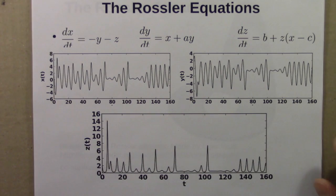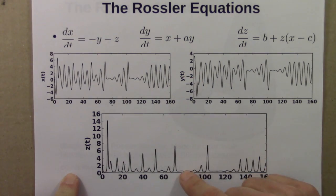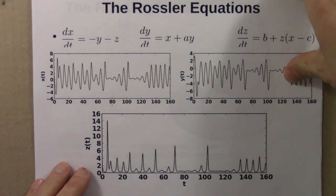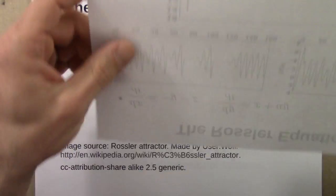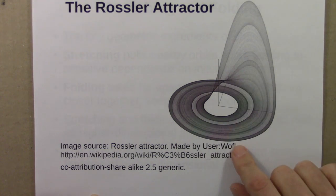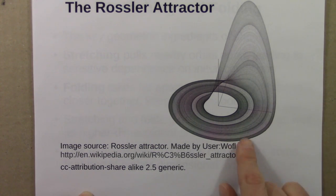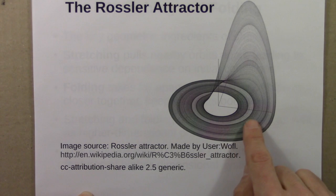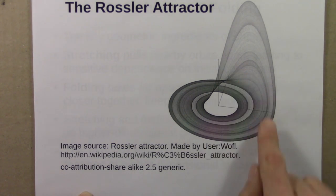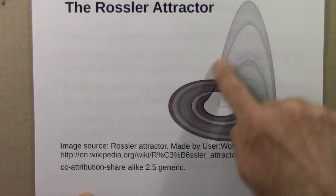As with the Lorenz equations, we can plot x versus y versus z in a three-dimensional phase space, and we see another strange attractor — the Rossler attractor. Here's a higher-resolution image from Wikipedia. Orbits move around, sometimes going up high, but they're generally cycling around in one direction while sometimes getting pulled up and down.